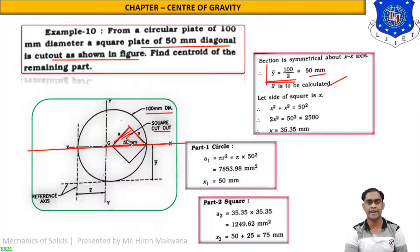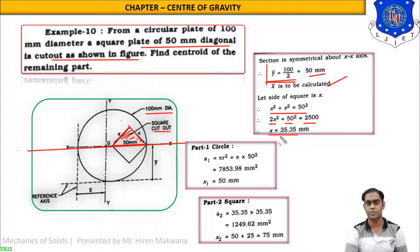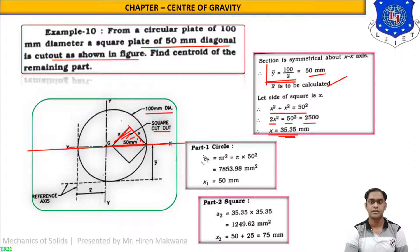For the square, if we take the small right-angle triangle formed by the diagonal, by the Pythagorean theorem: x² + x² = 50², so 2x² = 2500, giving x = 35.35 mm as the side of the square.